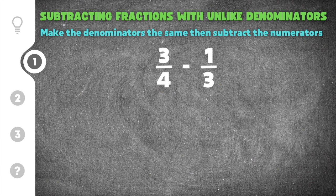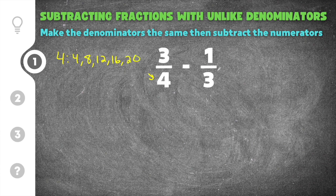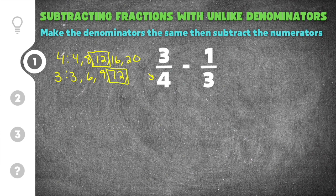I'm going to take the denominator in 3 fourths, which is 4, and list all of the multiples of 4: 4, 8, 12, 16, 20. Then I'm going to do the same thing with the denominator in 1 third, which is 3: 3, 6, 9, 12. I can stop here because I have a matching multiple — both 4 and 3 share 12. So our least common multiple is going to be 12.